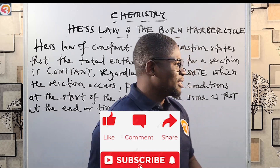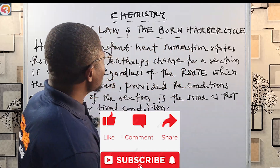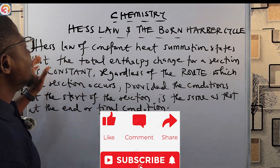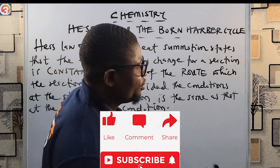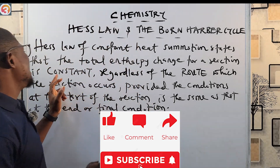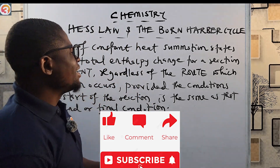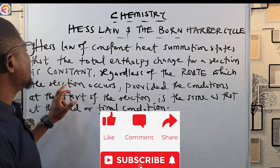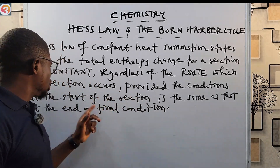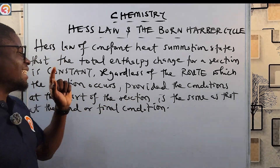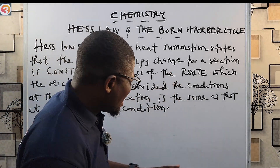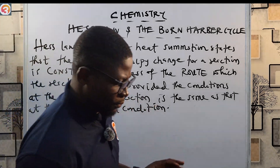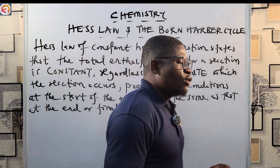Let's go over the law again. Hess's Law of Constant Heat Summation states that the total enthalpy change for a reaction is constant, regardless of the routes through which the chemical reaction occurs, provided the conditions at the start of the reaction are the same as those at the end or final condition.